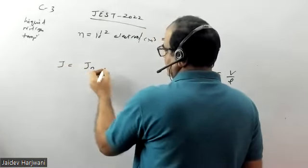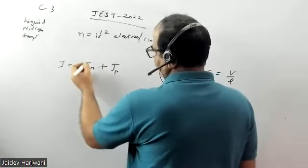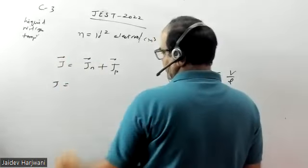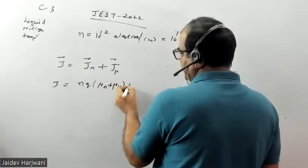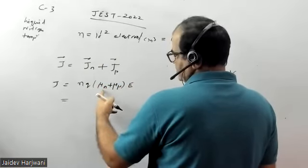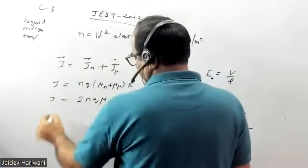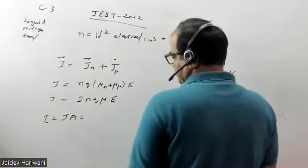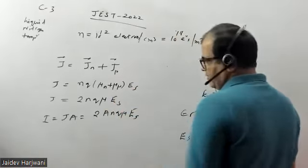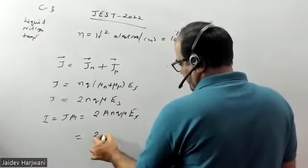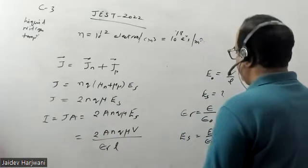For a semiconductor, the current density equation is J = Jₙ + Jₚ, the sum of electron and hole current contributions. Summing them gives J = n·q·(μₙ + μₚ)·E. Since the mobilities are equal, this simplifies to J = 2·n·q·μ·E. The total current I is simply J times the cross-sectional area A, giving I = 2·A·n·q·μ·Es, where Es = V/(εᵣ·L).